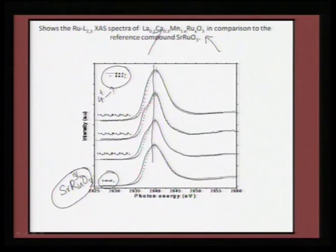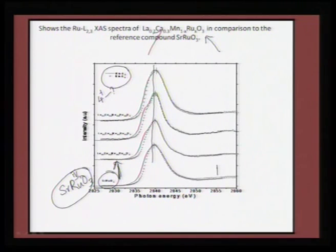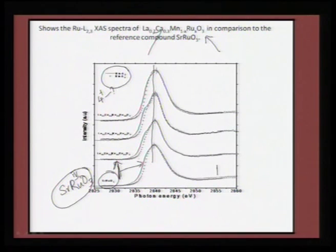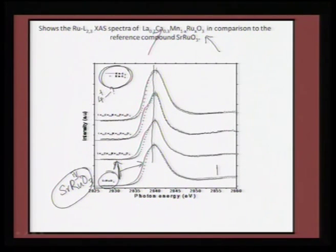The solid lines represent L3 and the open circles represent L2. L2 is supposed to come at lower energies but it is purposely shifted here so that a comparison between L2 and L3 edges can be made. What we see from this curve is that there is something significantly happening with the ruthenium oxidation state.